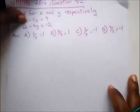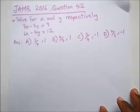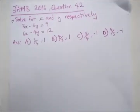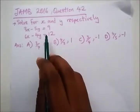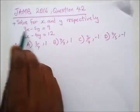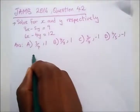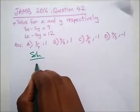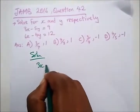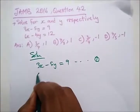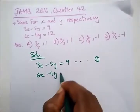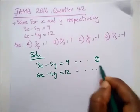The next question is from JAMB 2016, question 42. It says solve for x and y respectively. We have equation 1: 3x minus 5y equals 9, and equation 2: 6x minus 4y equals 12.